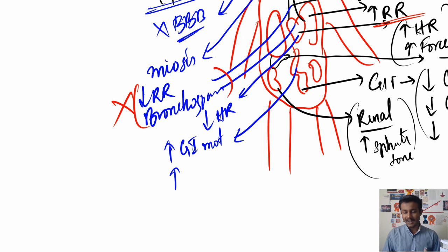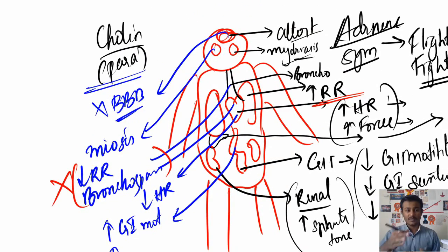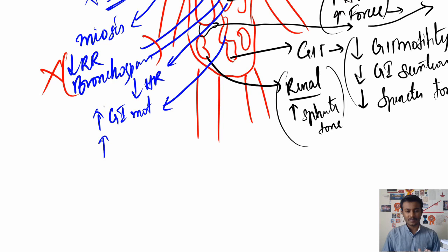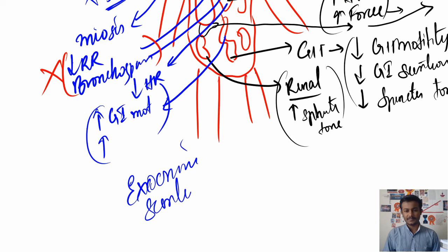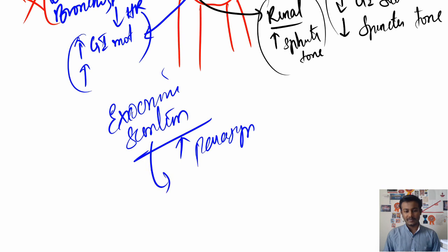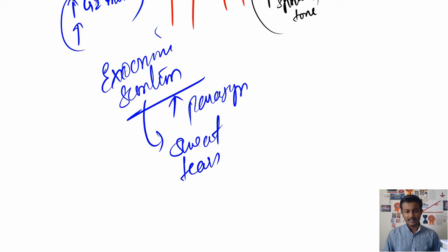For the heart, exact opposite: decreased heart rate — bradycardia. Increased GI motility, contraction of the urinary bladder, and relaxation of the sphincters of the GI tract and urethra. So the exact opposite of everything seen in the adrenergic system occurs in the cholinergic system. One more important thing: exocrine secretions — things like sweat, tears, saliva, and GI secretions — all increase in the case of parasympathetic stimulation.